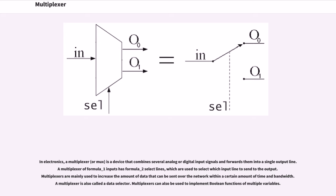A multiplexer. In electronics, a multiplexer is a device that combines several analog or digital input signals and forwards them into a single output line. A multiplexer with formula underscore one inputs has formula underscore two select lines, which are used to select which input line to send to the output.